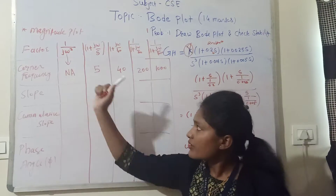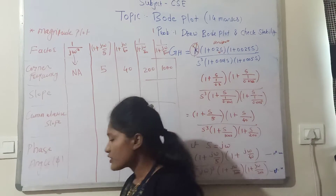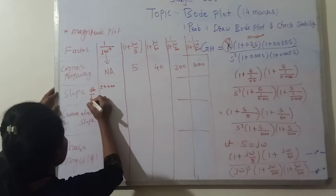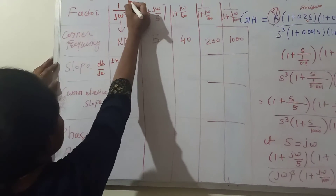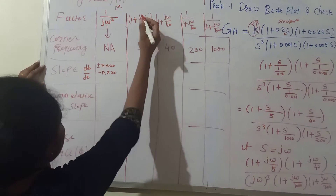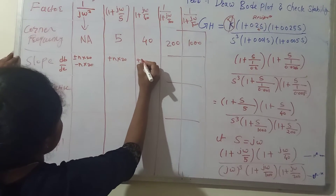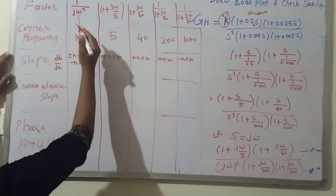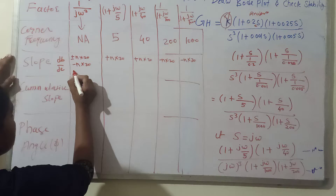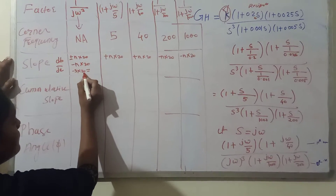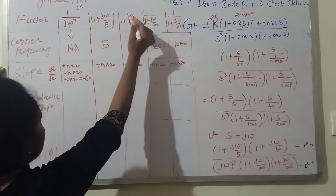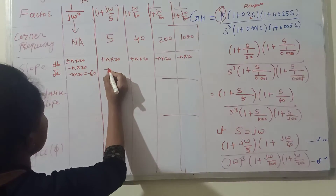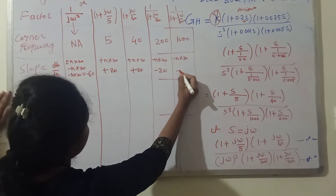For the slope column, the formula is plus minus n into 20 dB per decade. The (jω)³ factor is in the denominator, so slope = minus n into 20 = minus 3 × 20 = minus 60 dB/decade. For numerator factors n=1: slope = plus 20 dB/decade each. For denominator factors n=1: slope = minus 20 dB/decade each. So slopes are: −60, +20, +20, −20, −20.